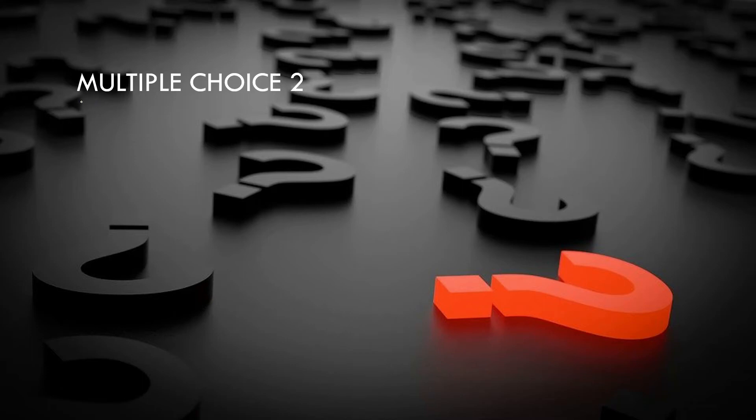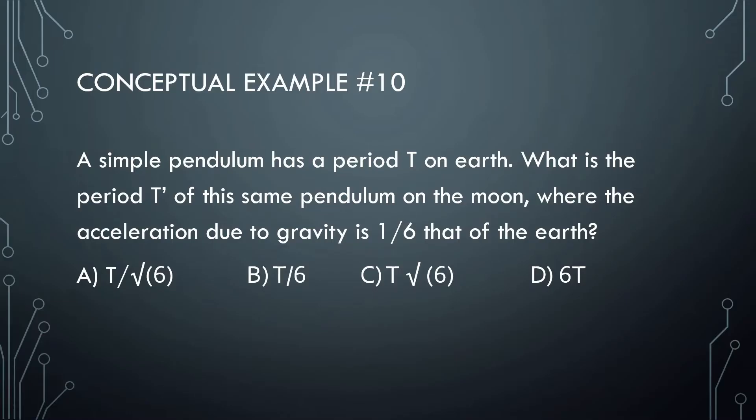Welcome back everybody to the second set of multiple choice questions. Let's get started. So first question here: a simple pendulum has a period of T on earth. What is the period T prime of the same pendulum on the moon with acceleration due to gravity is one sixth that of the earth?